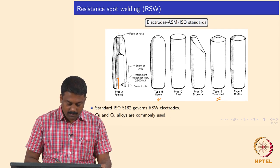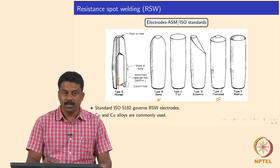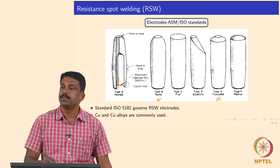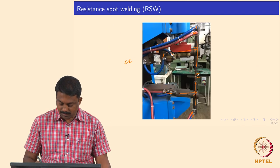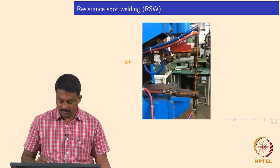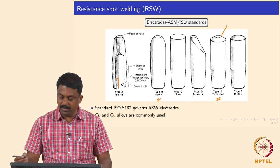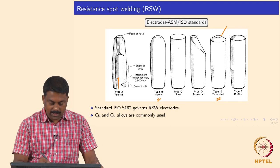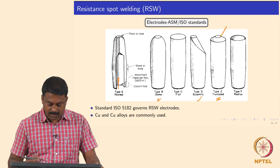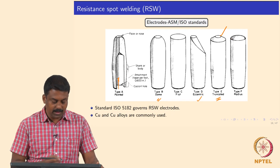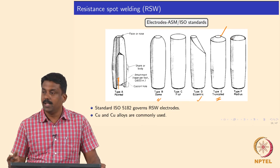You may have a type A pointer type, a dome type, or a truncated type — also very commonly used. There are also flat or concave radius electrodes, as well as some eccentric electrodes. All of this is governed by ISO standard 5182, which governs electrode selection and electrode material. The most commonly used material for making electrodes is copper or copper alloys, for good electrical conductivity and thermal conductivity so that heat can be extracted effectively.